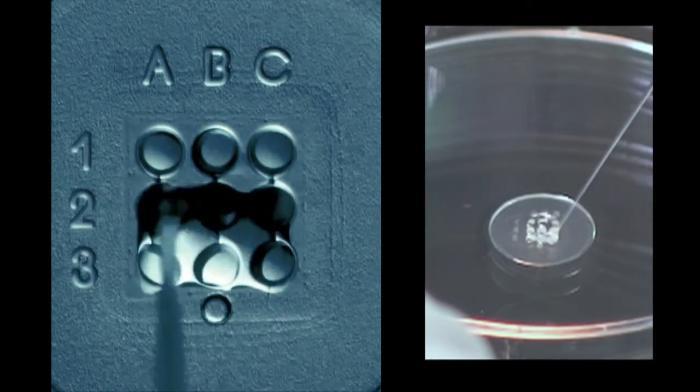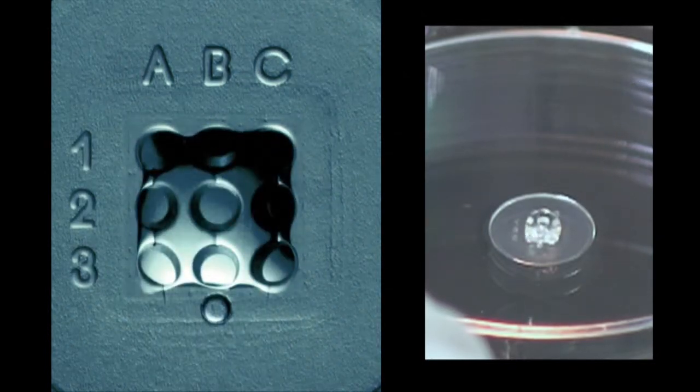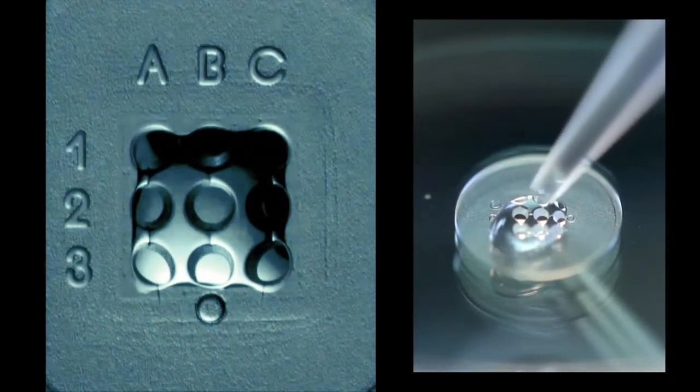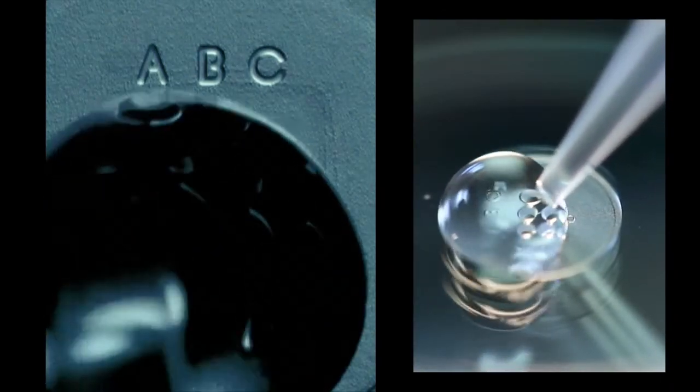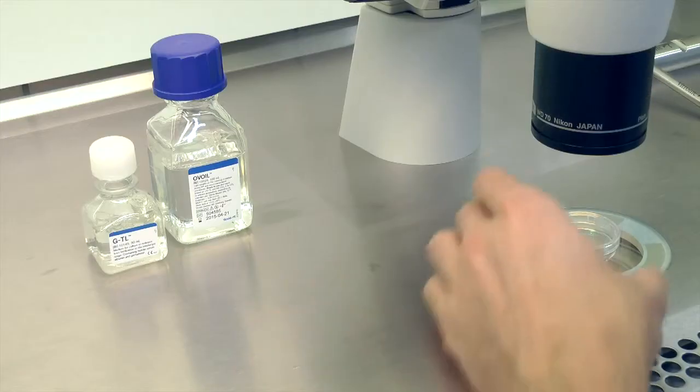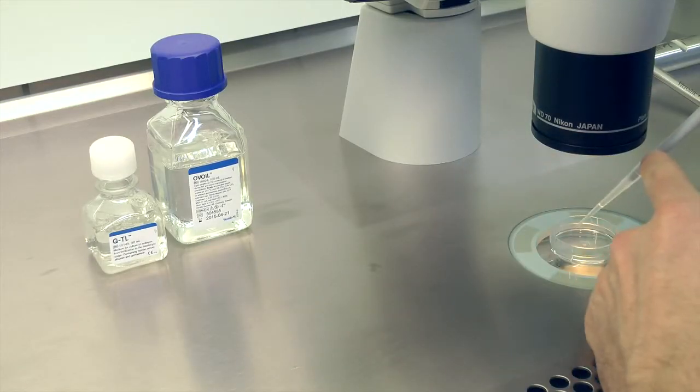The rim around the microwells does not mark the edge of the proposed culture droplet. The function of this rim is merely to stabilize the droplet of culture media. Add an additional two droplets of GTL as wash droplets and then cover it with oil.